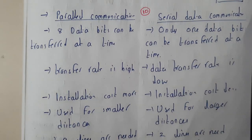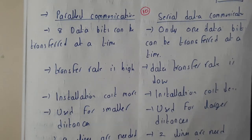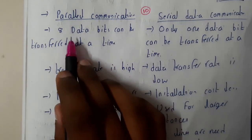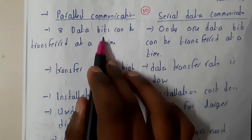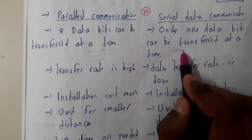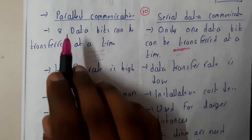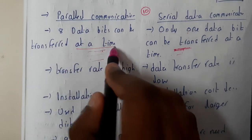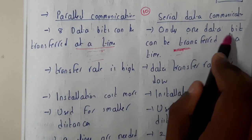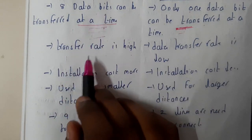Hello guys, we are back with our next tutorial. In this tutorial, let us go through the differences between parallel communication and serial data communication. In parallel communication, we will be transferring eight bits of data at a particular moment of time, whereas in serial communication we will be transferring one bit after the other in the same dedicated line. That is the main difference — eight bits of data can be transmitted at a time versus only one bit at a time.